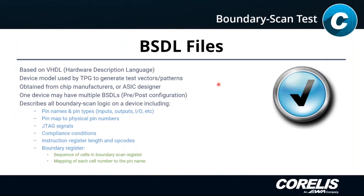The BSDL file describes pin names and pin types. It tells us which pins we have control over and how our boundary scan capability maps to physical pin numbers. It tells us which pins are our JTAG signals and describes compliance conditions — for example, a signal that needs to be set to a particular state for boundary scan capability to operate, like a test enable signal. It also describes the instruction register length, which is variable, the opcodes available, the boundary scan register sequence, and what those cells do.